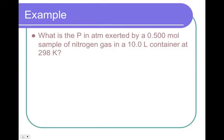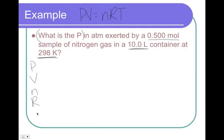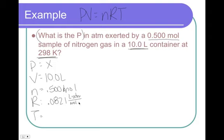So, our first example is going to be what is the pressure in atmospheres? So, what is the pressure is our question. Exerted by a 0.5 mole, the mole right there tells us that we are using PV equals NRT, since we're dealing with moles, we need an N, of nitrogen gas in a 10 liter container at 298 Kelvin. So, P, V, N, R, and T. Get it set up, doing the guess method. What is the pressure? So, that means P is X. Volume is 10.0 liters. N is 0.5 moles. R is 0.0821 liter atmosphere per mole Kelvin. And, temperature is 298 Kelvin.